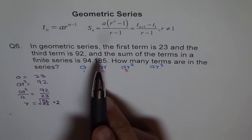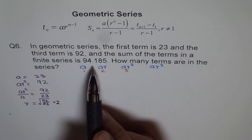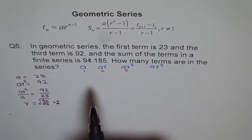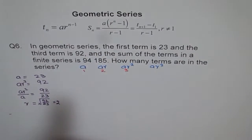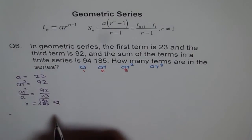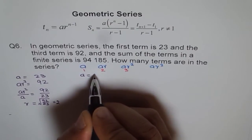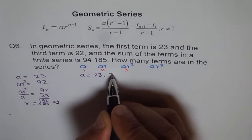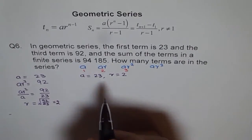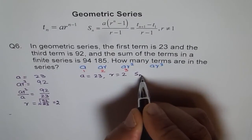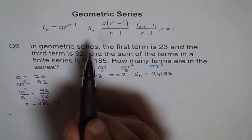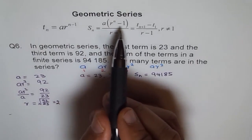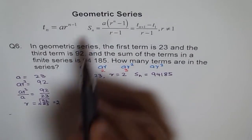Now, the sum of the terms in the finite series is 94,185. We know r, we know a, and we know the sum. We need to find how many terms are in the finite series, so we need to find n. We know a equals 23, r equals 2, and Sn equals 94,185. The only variable left is n, which we can find.